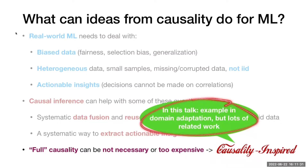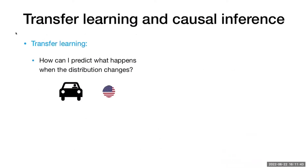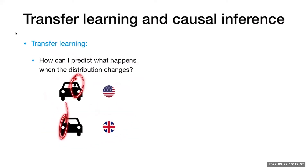There is a lot of related work. Transfer learning is notoriously vaguely defined, but I'll say it's about predicting what happens when the distribution changes — for example, a self-driving car trained in the US that we want to work in the UK, where people drive on the other side of the road.